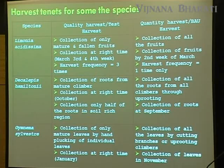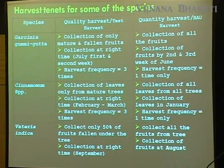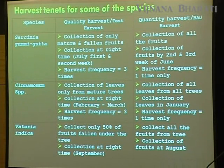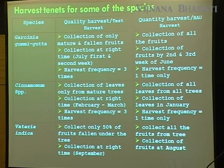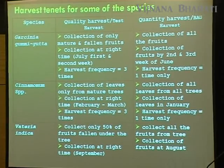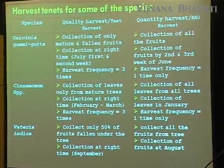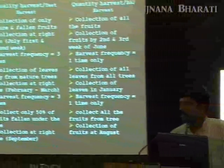For Gymnema sylvestre, hand plucking is better. For Garcinia gummigatta, collection of only matured fallen fruits, collected during the first or second week of July, with harvest frequency of three times. For Cinnamomum malabaricum or Cinnamomum sulpuratum, collection of leaves only from matured trees, collection at the right time between February and March, with harvest frequency of three times. Earlier they used to harvest branches along with leaves.